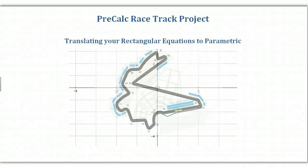Hi, this is PreCalc Racetrack Project and what we're going to do is show you how to translate your rectangular equations to parametric. So most of you have rectangular equations that you fit to this curve in Autograph or the Inspire CAS. Now what we want to do is put these into parametric form so that we can have one equation rolling right on top of another.